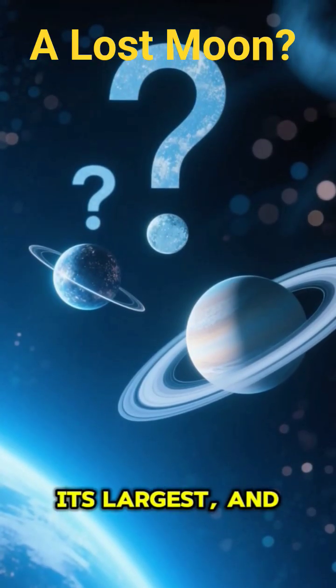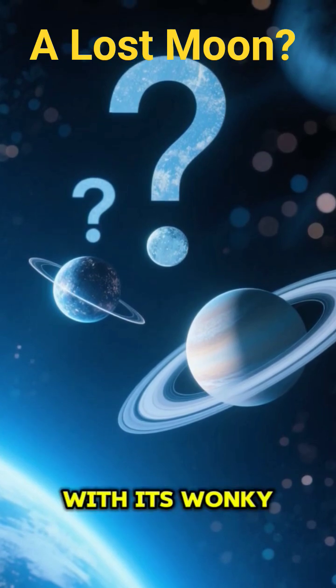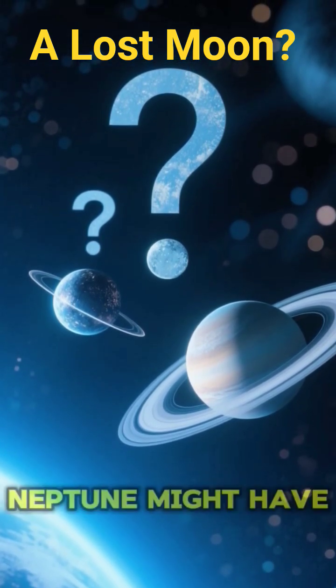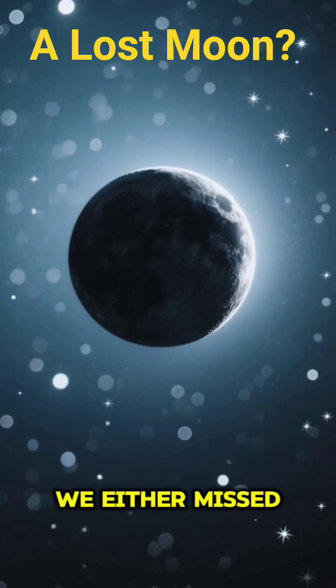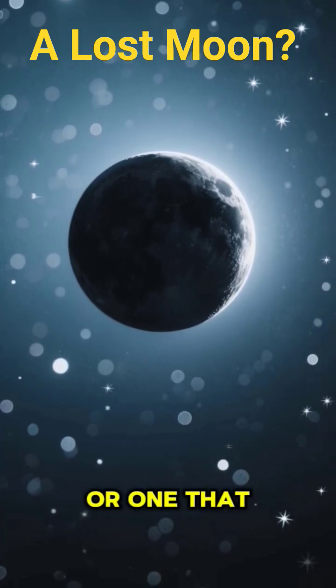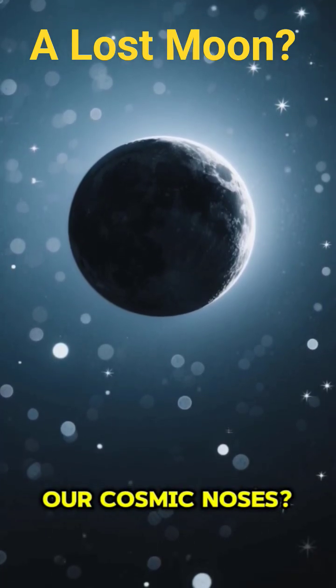We know Triton, its largest, and Nereid, with its wonky orbit. But what if I told you Neptune might have a lost moon? A celestial body we either missed entirely or one that vanished right under our cosmic noses.